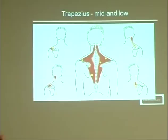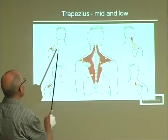If you're thinking trapezius and rhomboids, you're going to be more superficial. If you're thinking of iliocostalis underneath them, you're going to be deeper.